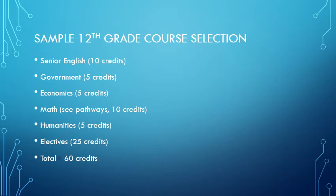12th grade gets a little more tricky because you have a lot more options and likely fewer credits that you need to earn. You will need Senior English classes for 10 credits. This will also be when you take your Government and Economics for 5 credits each. If you are thinking about college, you should take a 4th year of math for 10 credits.